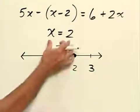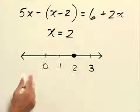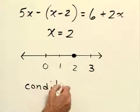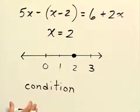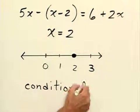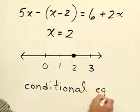Now this type of equation when we get one solution like this is also called a conditional equation. So this equation was true only on the condition that x is equal to 2. That is why this is called a conditional equation.